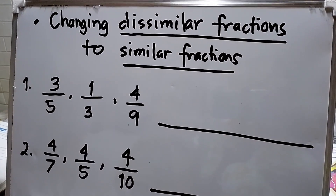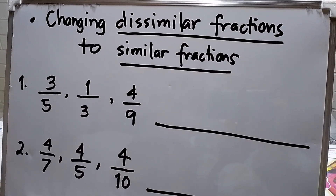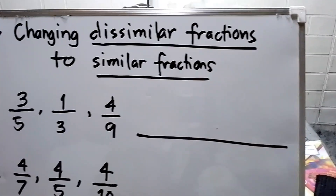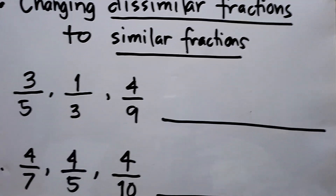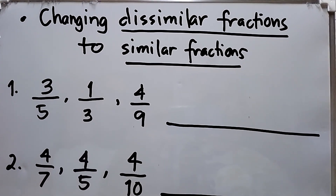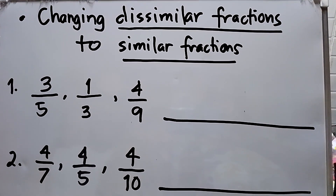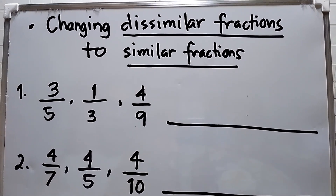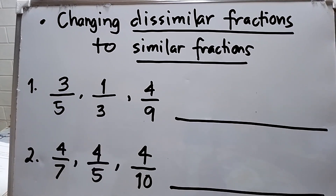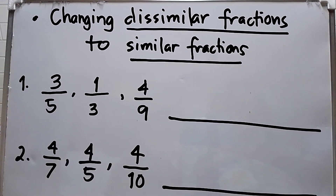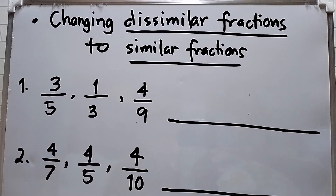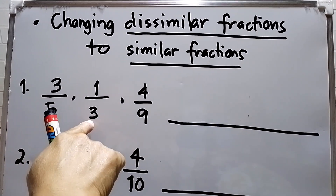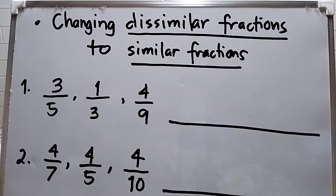Hello to my viewers. This is Maths for Grade 5. The topic is changing dissimilar fractions to similar fractions. I have here number one: three over five, one third, and the last is four over nine. First thing to do is we have to find the LCD between five, three, and nine.